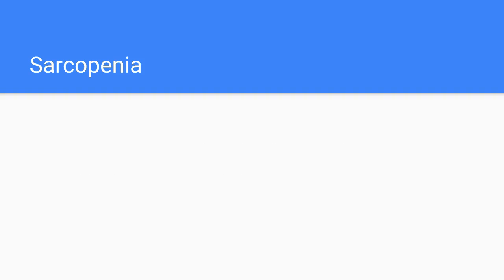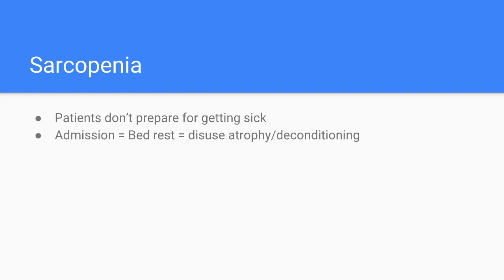Our patients don't know they're going to get sick. Unlike astronauts, they don't prepare for their acute stress events. They don't build up a reserve in the gym beforehand. And then, regardless of what they've come into hospital with, we invariably tuck them up in bed. They do exactly what we'd expect them to do — they rapidly lose muscle strength and power. Then we try to get them up a week later and are surprised they can't. I've worked in hospital for almost ten years now, and I've never seen anyone really exercising in hospital. They may walk up and down a corridor with a therapist for ten minutes, but more than that, never. Should we change? Undoubtedly. Are we going to? I'll leave that for you to consider.